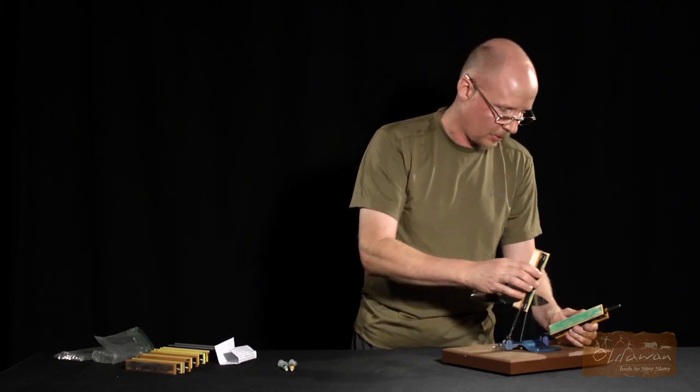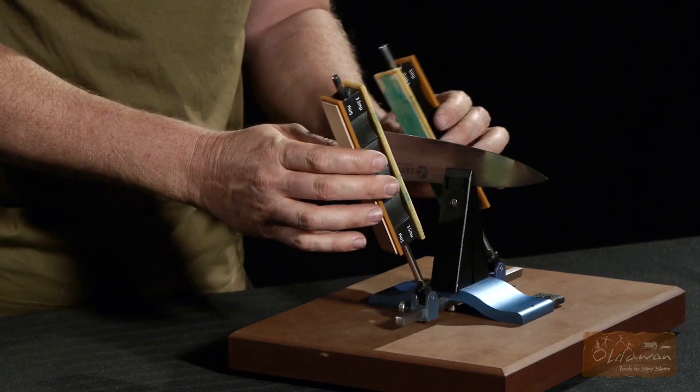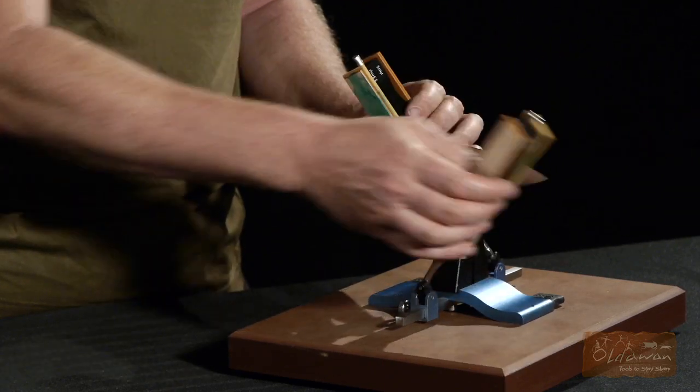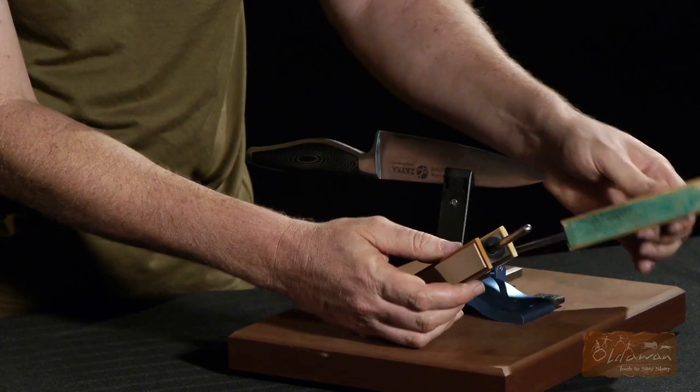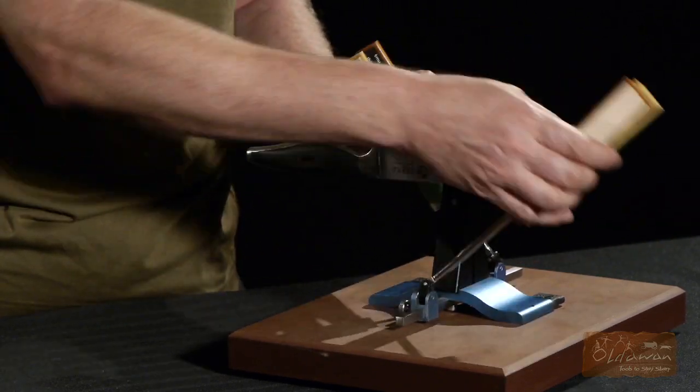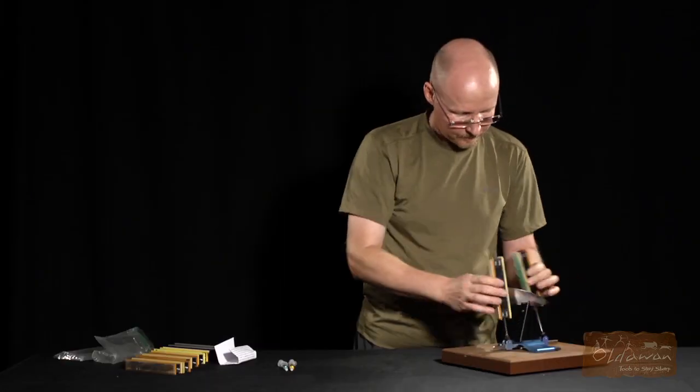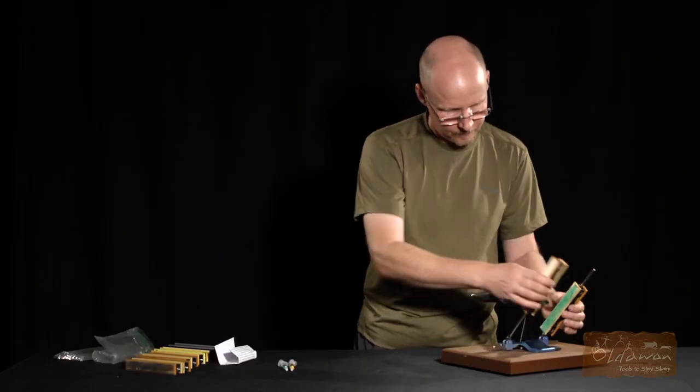Then you can do just some nice, long, slow strokes to even your work in and make sure that it goes even over the full edge of the knife. You can see I'm leaving the green diamond paste on the cutting edge there.